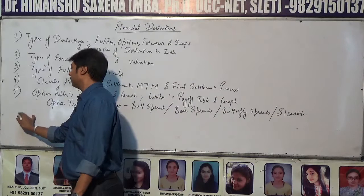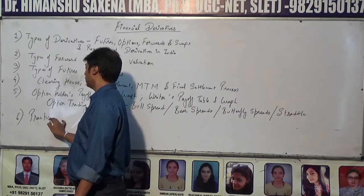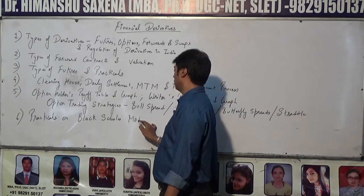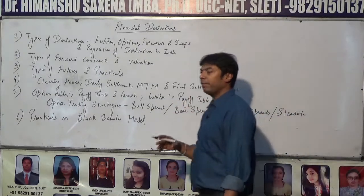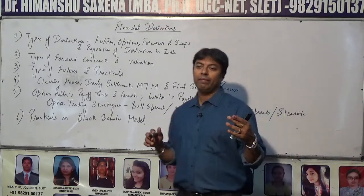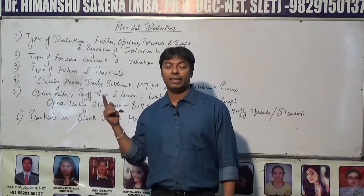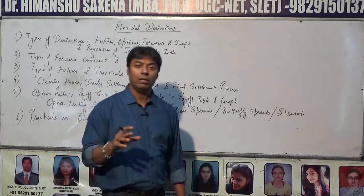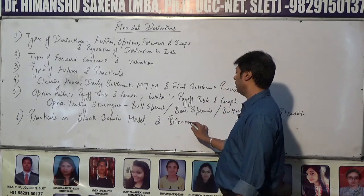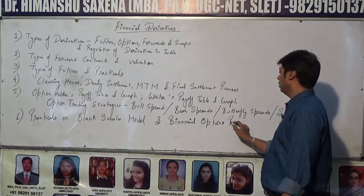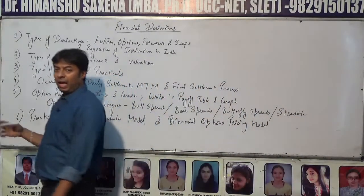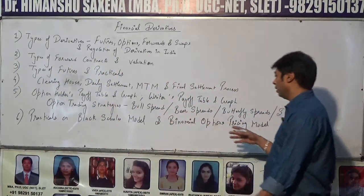Next are practicals on the Black-Scholes model, which have been done in detail with all variations: the standard Black-Scholes model with no dividend income, the Black-Scholes model with discrete dividend income, and the Black-Scholes model with continuous dividend income. Also important is the binomial options pricing model — both the two-stage model and the three-stage model.